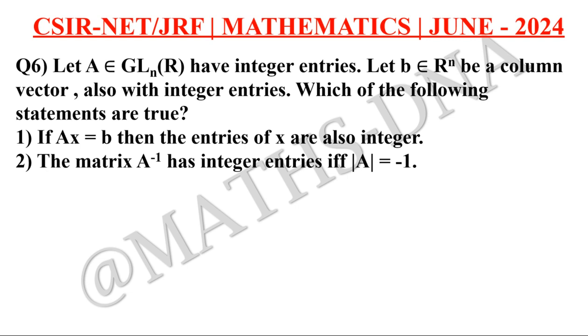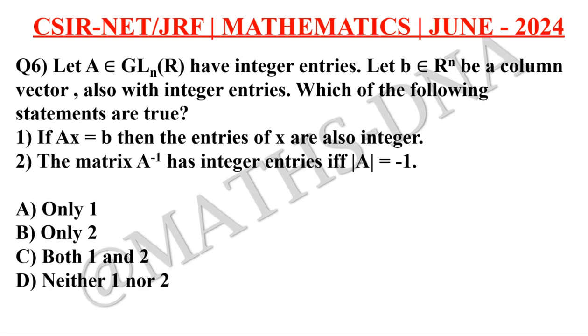Second, the matrix A inverse has integer entries if and only if determinant of A is equals to minus 1 or plus 1. The options will be A, only first one is correct, B, only second one is correct, C, both are correct, and D, neither one nor two, means both are incorrect.